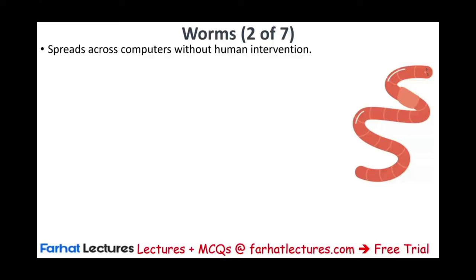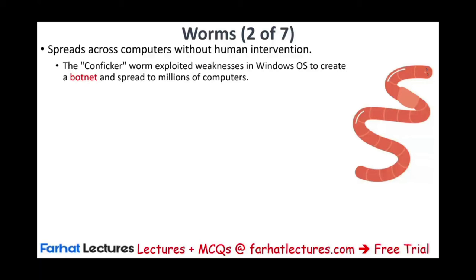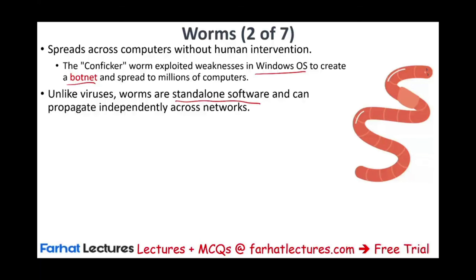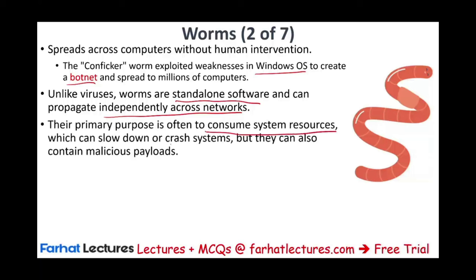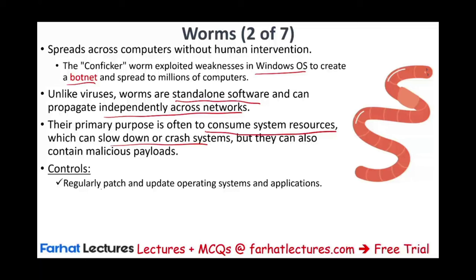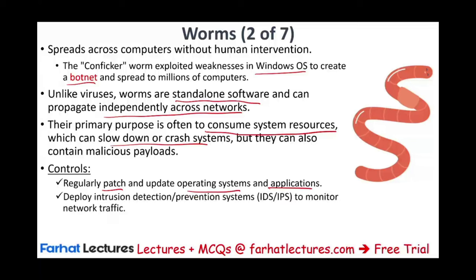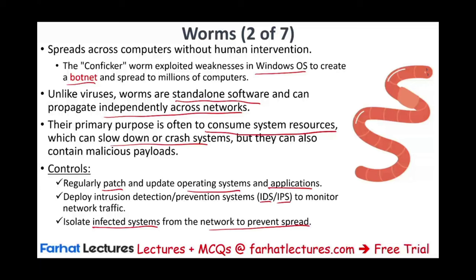Worms spread across computers without human intervention. For example, the Conficker worm exploited weaknesses in Windows OS to create a botnet and spread to millions of computers. Unlike viruses, worms are standalone software that can replicate independently across networks — they don't need a host. Their primary purpose is often to consume system resources, slowing down or crashing the system, but they can also carry malicious payloads. Controls include regular OS patching, deploying intrusion detection and prevention systems (IDS/IPS) to monitor network traffic, and isolating infected systems once identified.